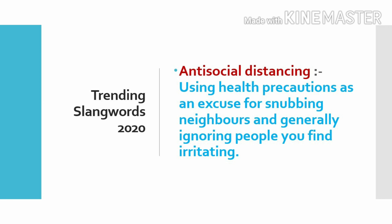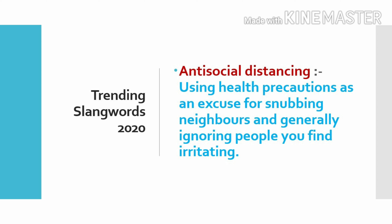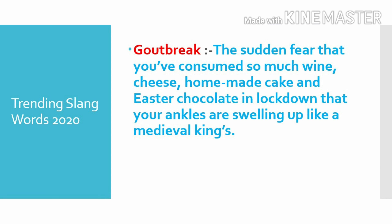Next slang: anti-social distancing — using health precautions as an excuse for snubbing neighbors and generally ignoring people you find irritating. Next significant slang: covidiot or wuhanker — meaning one who ignores public health advice or behaves with reckless disregard for the safety of others; can be said to display 'covidiotic' behavior. Also called a 'lockdown clown' or 'wuhanker.'